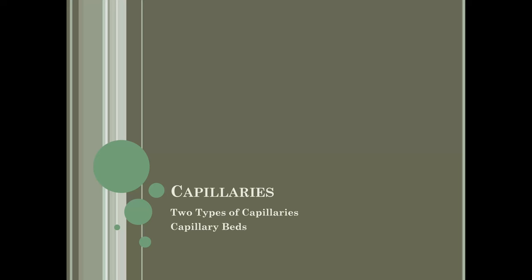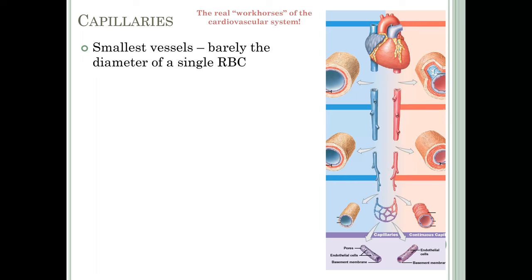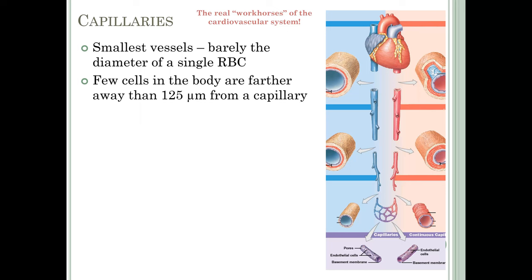Now we'll talk about capillaries — the real workhorses of the cardiovascular system where all exchange takes place. These are the smallest vessels, barely the diameter of a single red blood cell. Few cells in the body are farther away than 125 micrometers from a capillary, illustrating just how numerous and widespread capillaries are — most cells in your body are very close to a capillary.